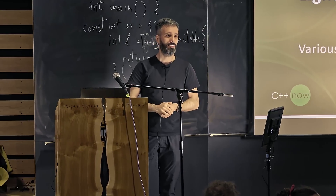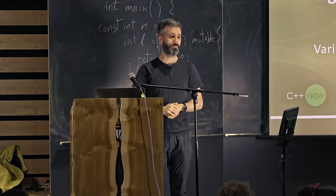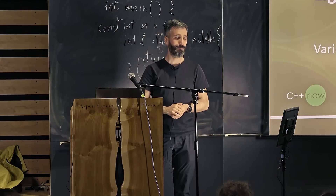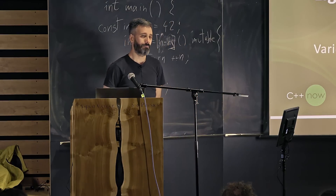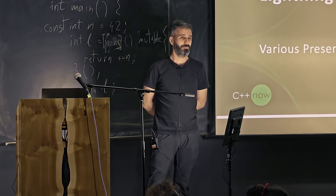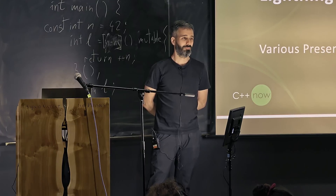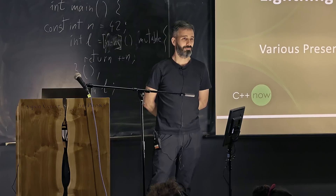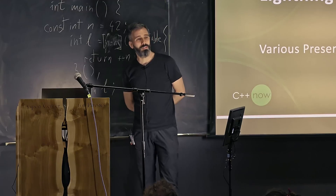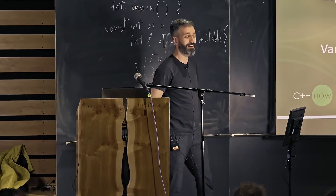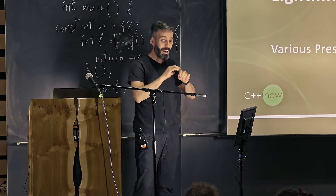There's this thing in the memory model called 'out of thin air' — with relaxed atomics, you can in theory have an atomic that winds up with a value nobody ever actually stored anywhere. If you divide by a relaxed atomic that has hallucinated a value of zero, that could cause undefined behavior. It's like ChatGPT for your memory model — it hallucinates values. I like out of thin air; it's the most beautiful theoretical UB that has never actually manifested.